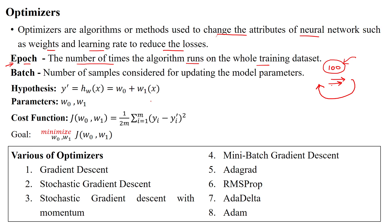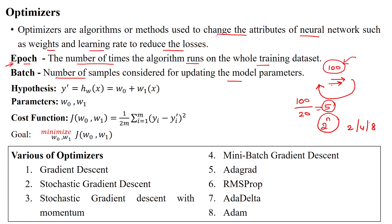The epoch is very important in deep neural networks. A batch is the number of samples considered for updating the model parameters each time. Sometimes the network divides samples into a number of batches — for example, 20 samples per batch gives 5 batches. Mostly we create batches in the form of powers of 2: 2, 4, 8, and so on.